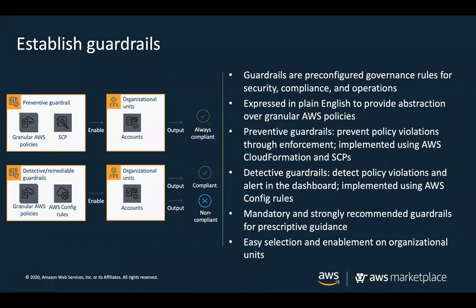In AWS Control Tower, there are two kinds of guardrails: preventive and detective. Preventive guardrails are based on service control policies and apply at the entire account level. Detective guardrails are AWS Config-based and apply at the regional level. Both prevent and detect policy violations. An example of a detective guardrail especially important in networking is identifying when a resource is connected to the internet — if a resource has ports open to RDP or SSH, it will immediately show up on the Control Tower dashboard, identifying the resource and which member account it's in.